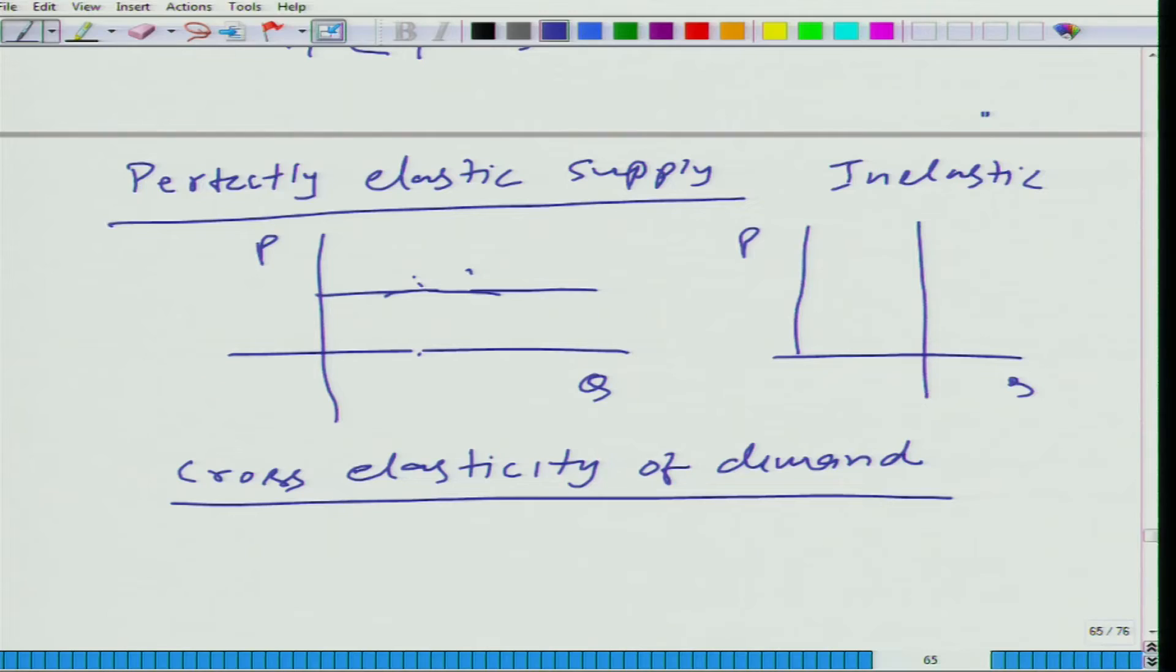So let us say cross elasticity, this is denoted by E_xy. Why we are putting E_xy? We are talking about change in quantity of good 1 given by x, proportional change in quantity of good 1 with respect to change in price of y, good 2. And that we have here, fine.